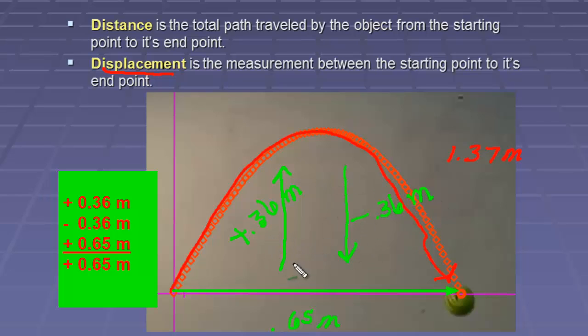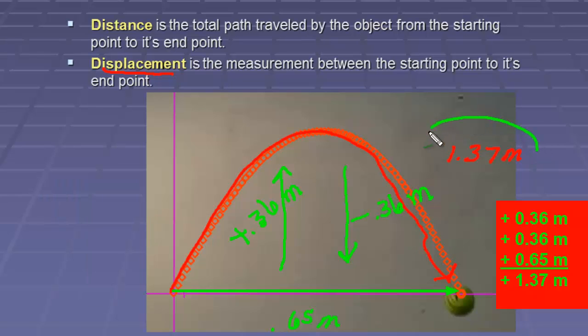So we consider the direction. We would have .65 plus .36 minus .36. 1.37 did not include the direction. So it just added .36 plus .36.